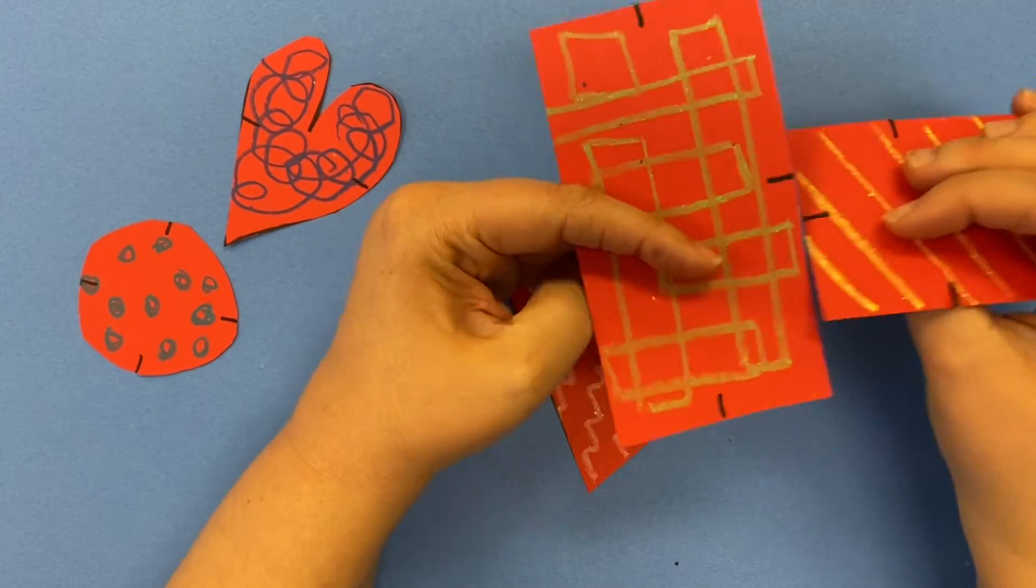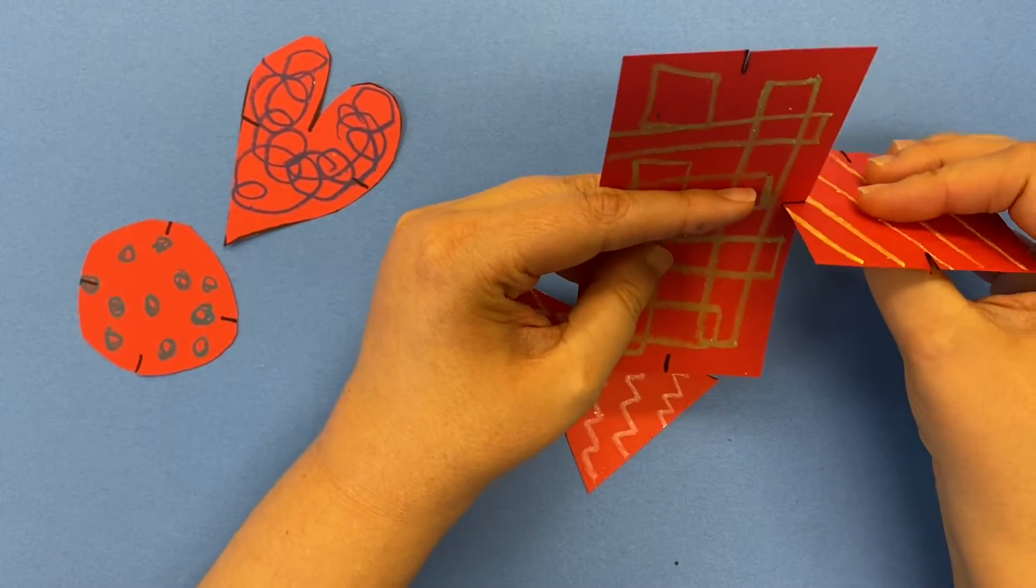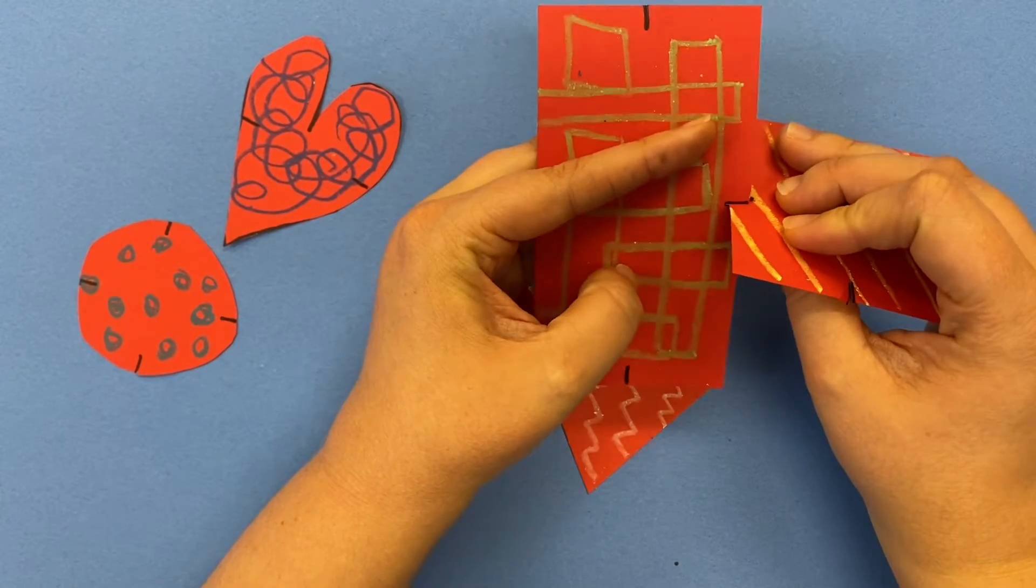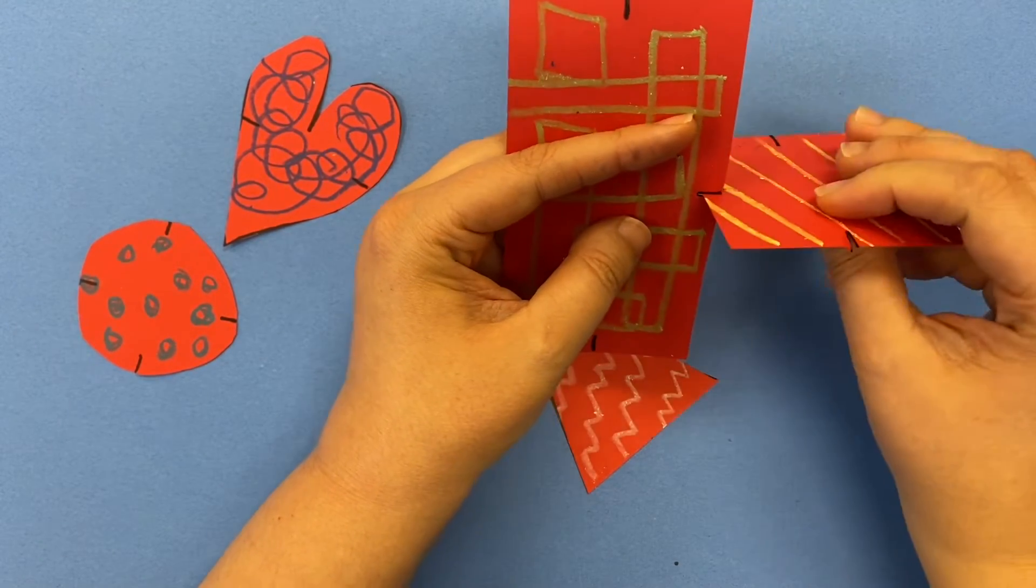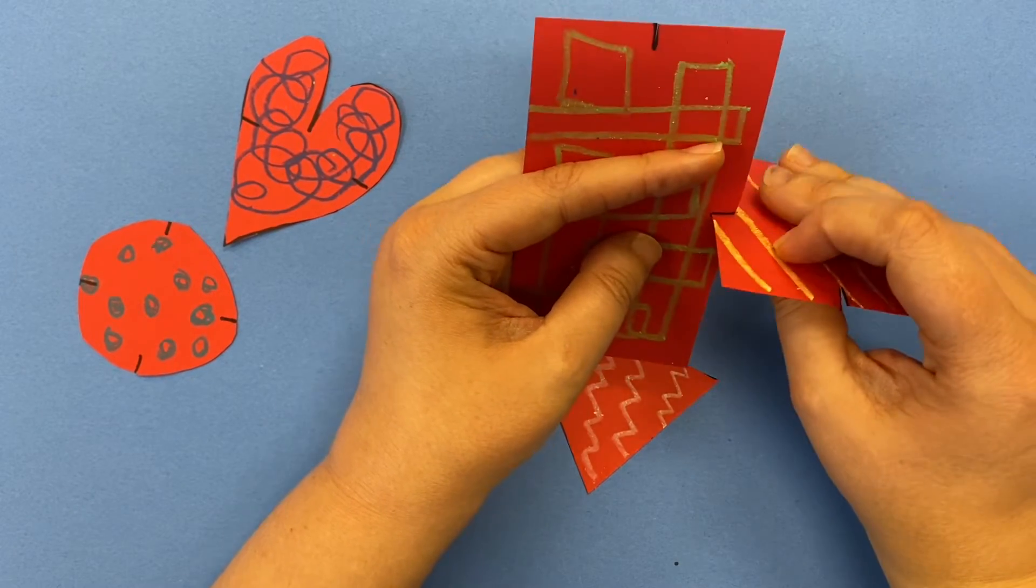So you're going to take those two lines and you're going to stick them together. Now, if I only do it like that, I don't know if you can see, that's not very strong, right? That's going to come apart really easily.